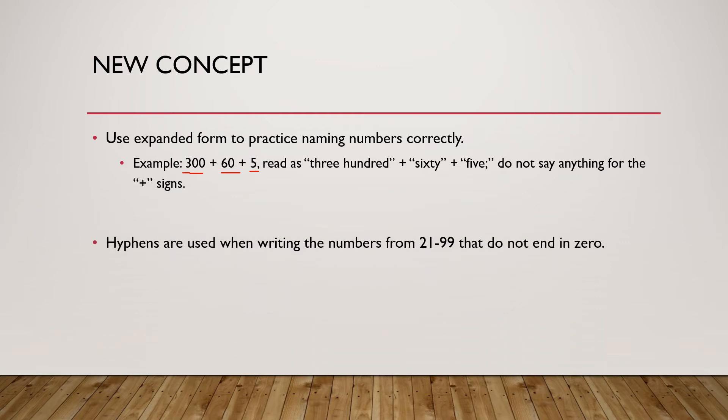Hyphens are used when writing numbers from 21 to 99 with words that don't end in zero. For example, 34: notice the hyphen between the words thirty and four right here. We don't have it with just a space right here.